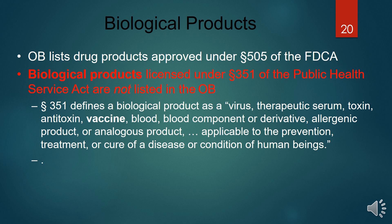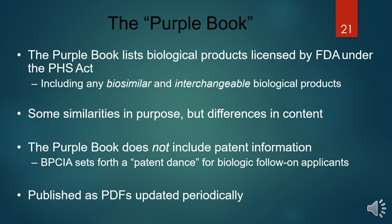Regarding biological products: those licensed under Section 351 of the Public Health Service Act are not listed in the Orange Book. This includes viruses, therapeutic serums, toxins, anti-toxins, vaccines, and blood products. These are covered by the Purple Book, which lists biological products licensed by the FDA, including biosimilar and interchangeable biological products.